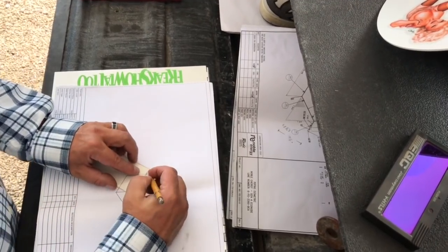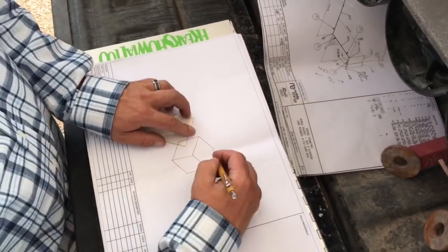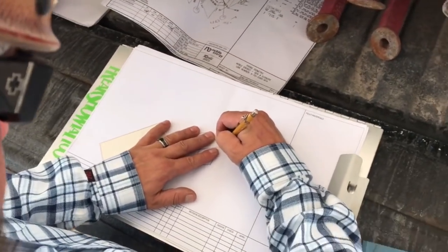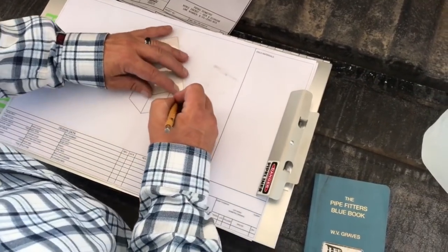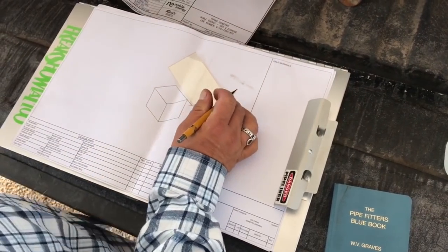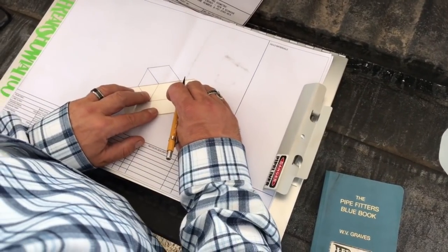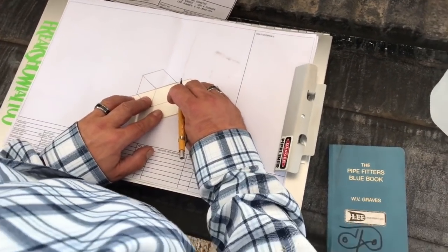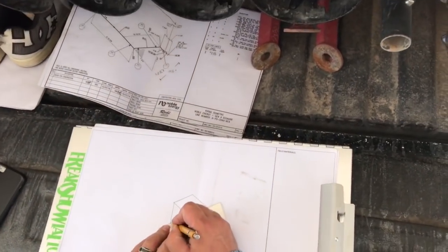Alright, so our flange is sitting on the inside, correct? Inside, yep. Okay. That means our flange is coming out right here. And we're going to go half a 45, and we're going to go with the flange. Usually I stretch it down a little bit more, but that's all right. That's what we got.